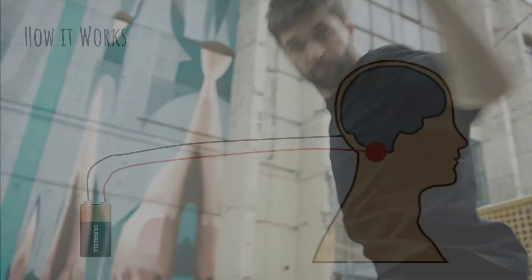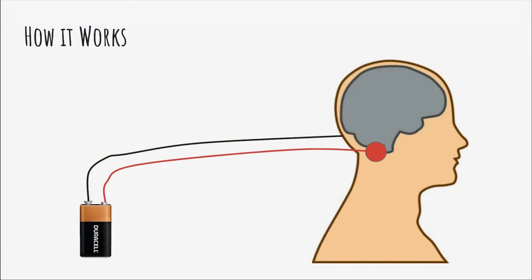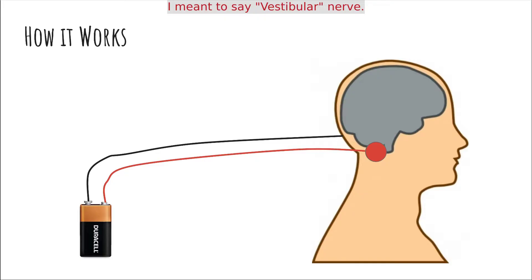Galvanic vestibular stimulation involves sending a small current to the galvanic nerve behind the ear. This small amount of current stimulates the nerve and makes the brain believe that the head and the body are in a different position than they really are. By applying a positive voltage, we can make the person believe that they are tilted to the right, and by reversing the voltage, the feeling of tilting in the opposite direction will become prevalent.